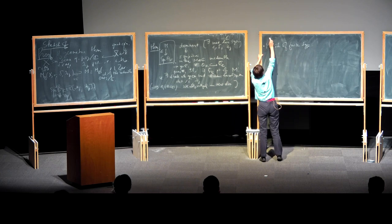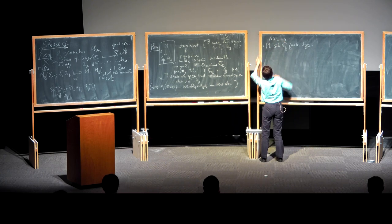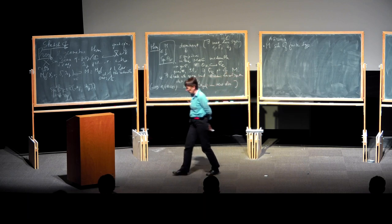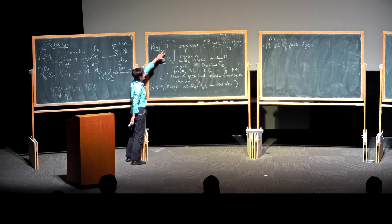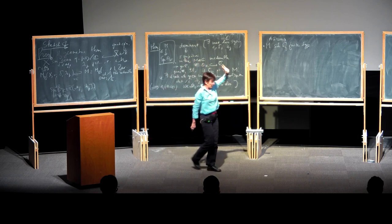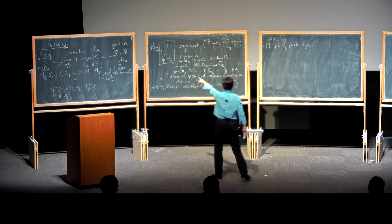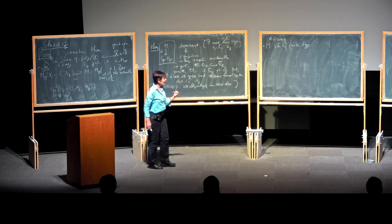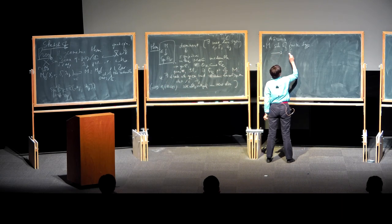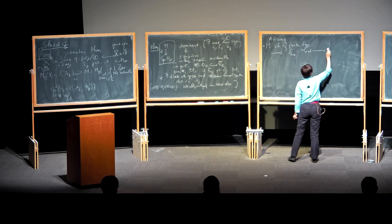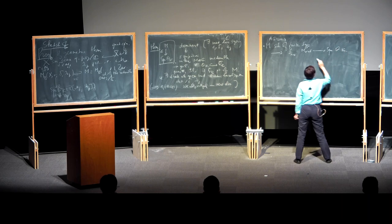Whenever we have a morphism between a scheme of finite type and another one — Spec O_K here — algebraic geometry says that the underlying reduced structure of this morphism is generically smooth. So epsilon, from M_reduced to Spec O_K, is generically smooth — generically on M.